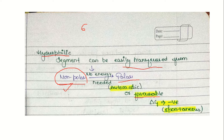If the amino acids in that segment are hydrophilic — meaning water-loving — they will be easily transferred into the polar solvent. No energy input is needed; the process is spontaneous and favorable. So delta G will be negative for hydrophilic segments, and this will show up as a negative peak on our hydropathy plot.